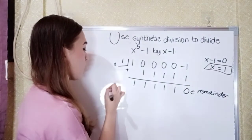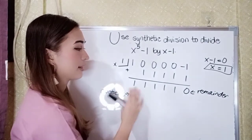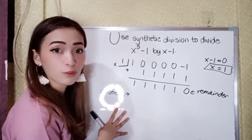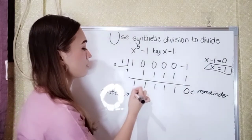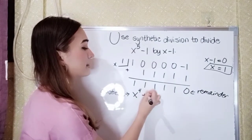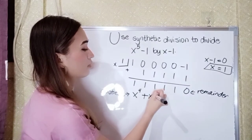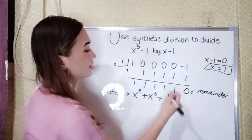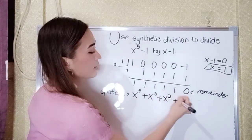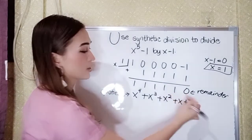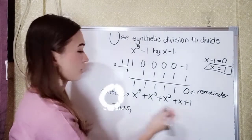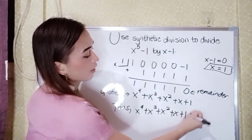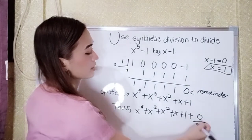What is our quotient? Since the highest exponent is x to the 5th power, our quotient's highest exponent is x to the 4th power. Since all values are 1 and positive, our equation is x to the 4th power plus x cubed plus x squared plus x plus 1. The remainder is 0 over x minus 1, so no remainder term.